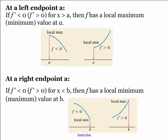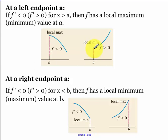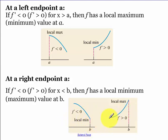At a left endpoint, we have a local maximum if your first derivative is decreasing on that interval, and a local minimum if after that point our first derivative is increasing. At a right endpoint, if your first derivative is decreasing to the left of that endpoint we have a minimum, and if we're increasing to the left of that endpoint we're going to have a maximum.